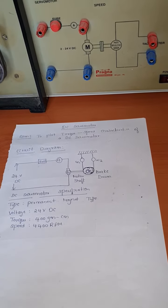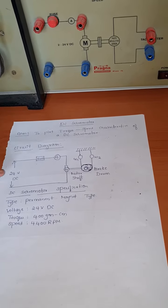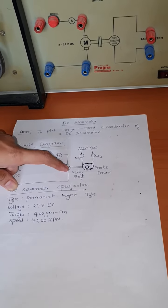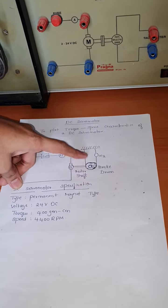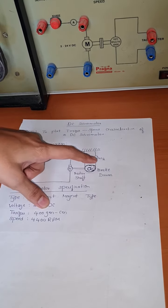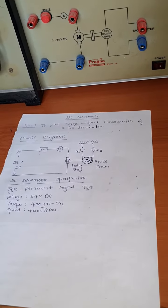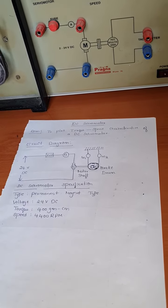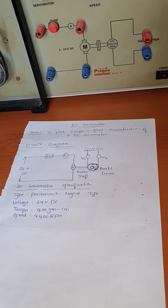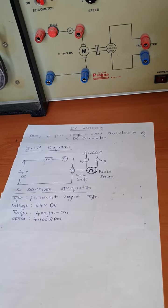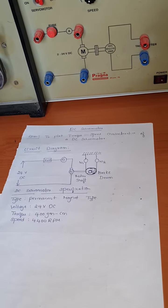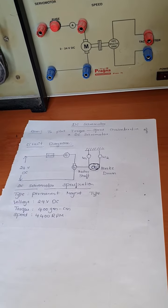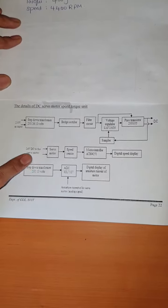Coming to the circuit diagram for the DC servomotor: the input supply is 24V DC, fed to the fuse, then an ammeter, and then the DC motor. The DC motor is coupled to the load, which here is a brake drum providing variable load. W1 and W2 are the two load weights. As load increases, torque and speed are affected. The input voltage is 24V DC, and the rated speed of the servomotor is 4400 RPM.